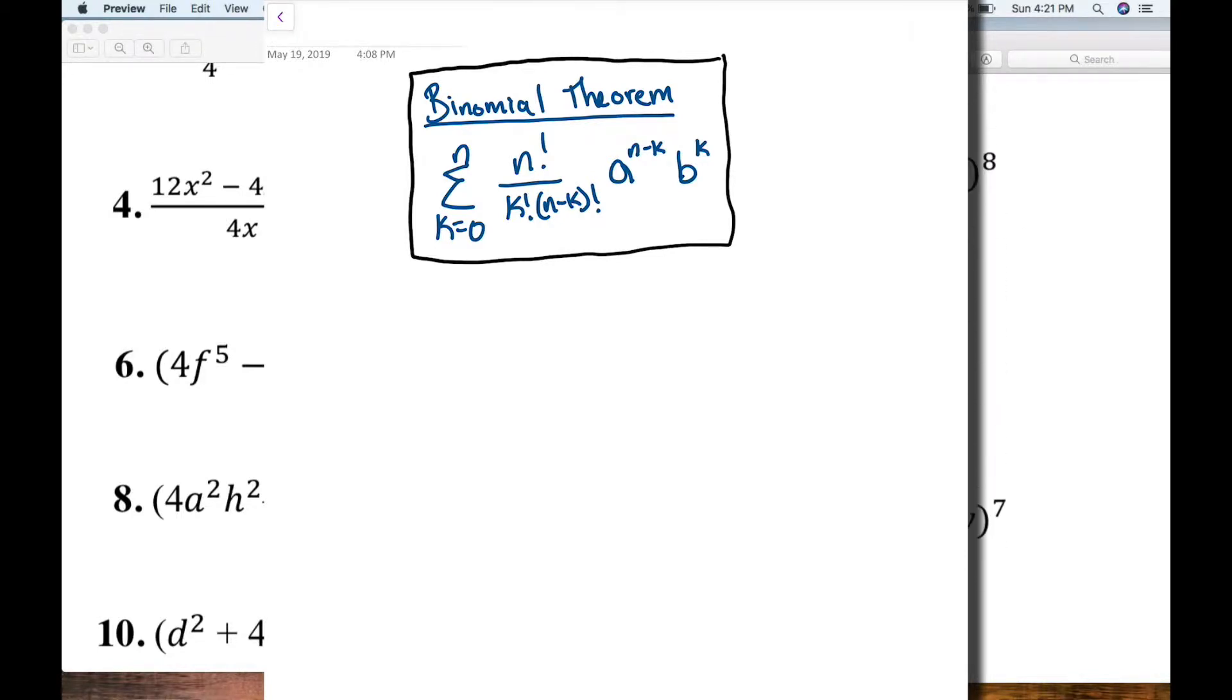I'm looking at page 13 number 16. For number 16, it's asking us to find the 12th term of 13x minus 4y raised to the 11th power. So it's asking us for the 12th term and it's to the 11th power. So essentially what I'm looking for is the last term. And I'm going to use my binomial theorem formula to find that last term.